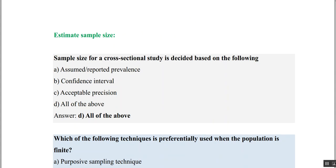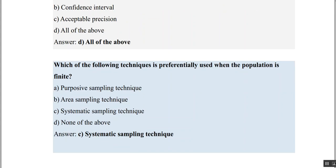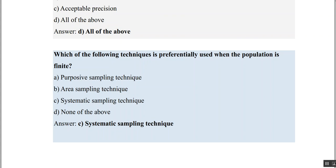Sample size is decided based on prevalence, confidence interval, and acceptable precision. Please refer to Chapter 12 for sample size calculation. Regarding which technique is preferentially used when the population is finite — refer to the chapter on sampling techniques. When the population is limited, we always go for the systematic sampling technique.